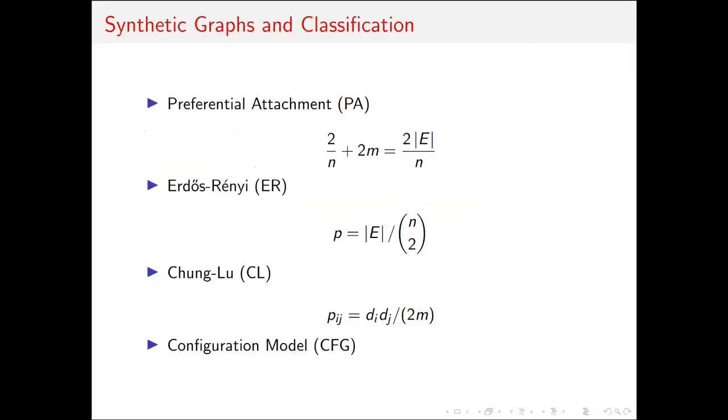Our classification framework trains on synthetic graphs that are generated with these random graph models: preferential attachment, Erdős-Rényi, Chung-Lu, and configuration model. The classification model learns to predict the model that has been generated from, so our classification targets are these four random graph models.